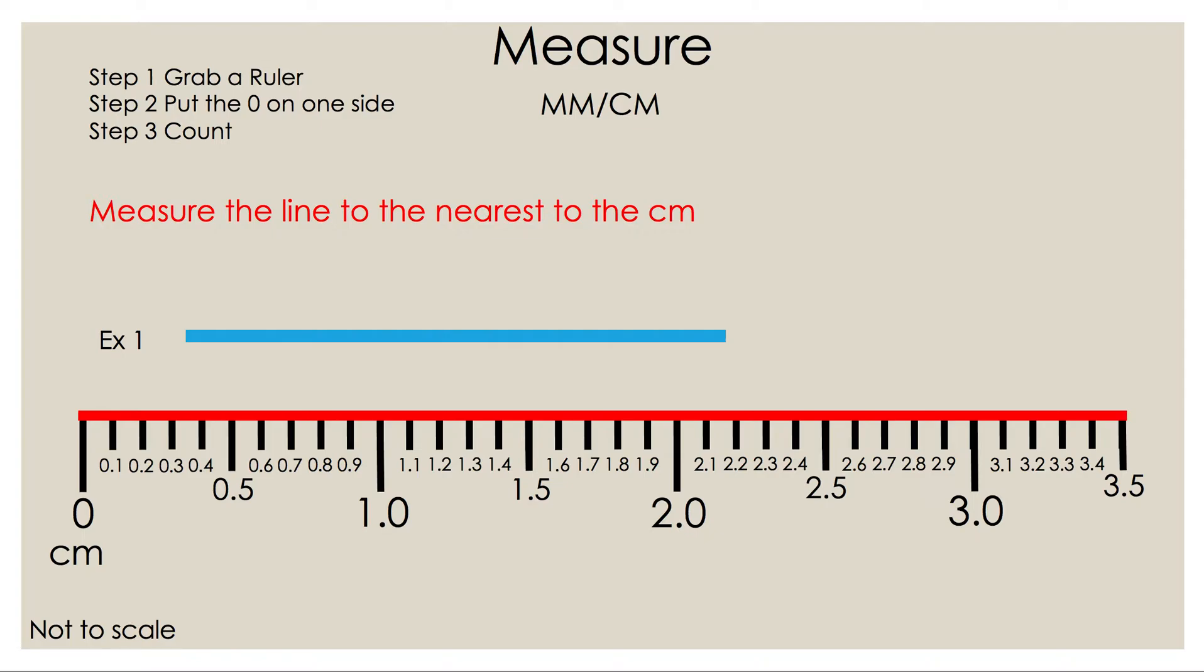As you can see the ruler on the screen is blown up and has numbers under each tick mark. In real life the ruler will be smaller and those numbers will not be there. We're going to do two examples with the numbers there so you know what to do and how to count. Then we'll take away the numbers so you know what to do when they're not there.